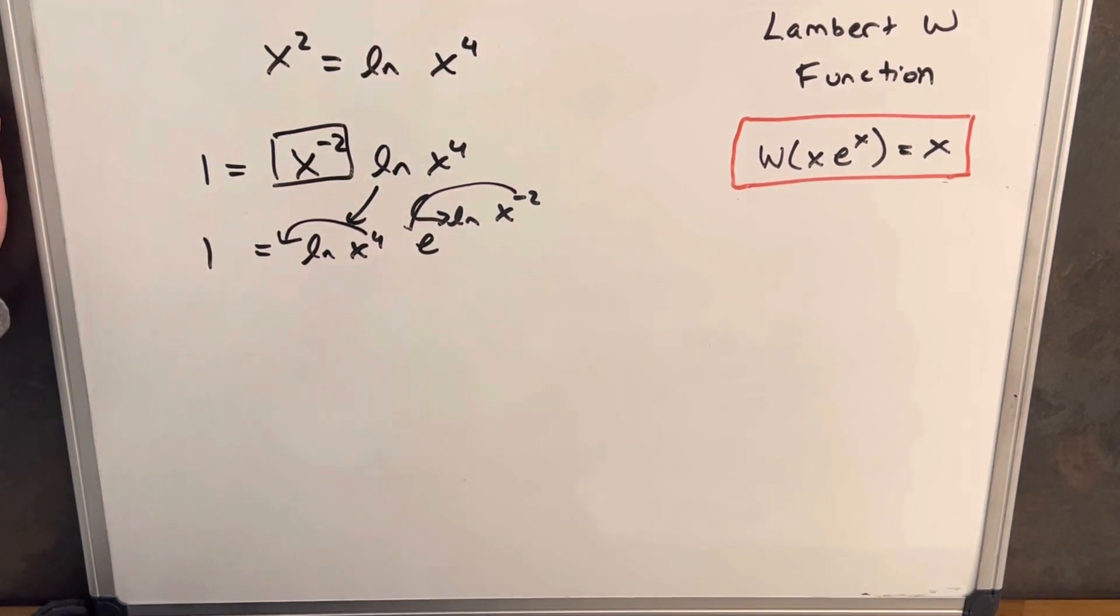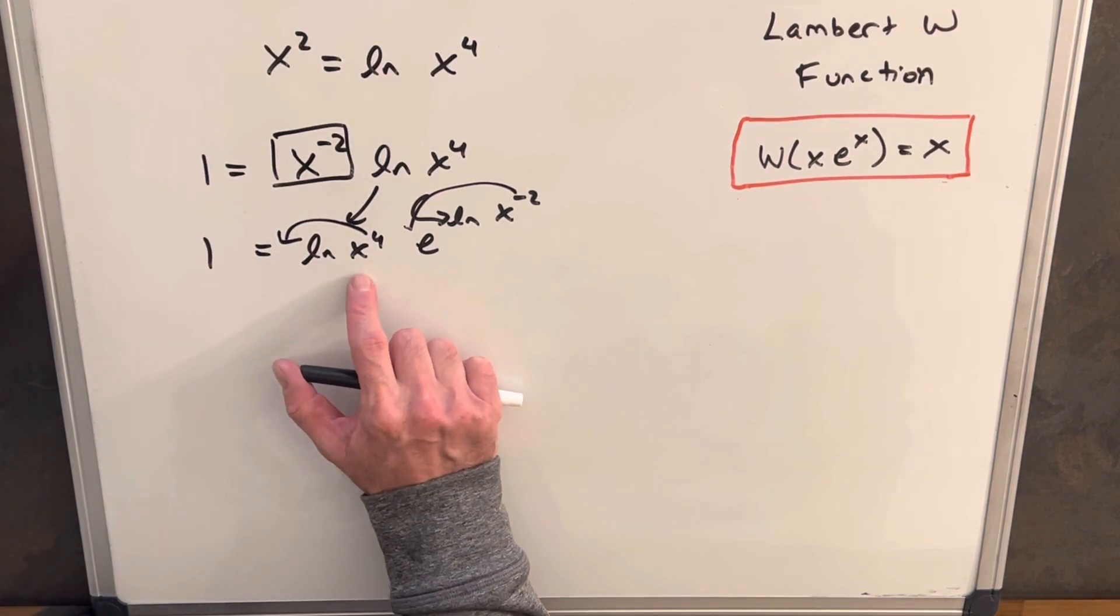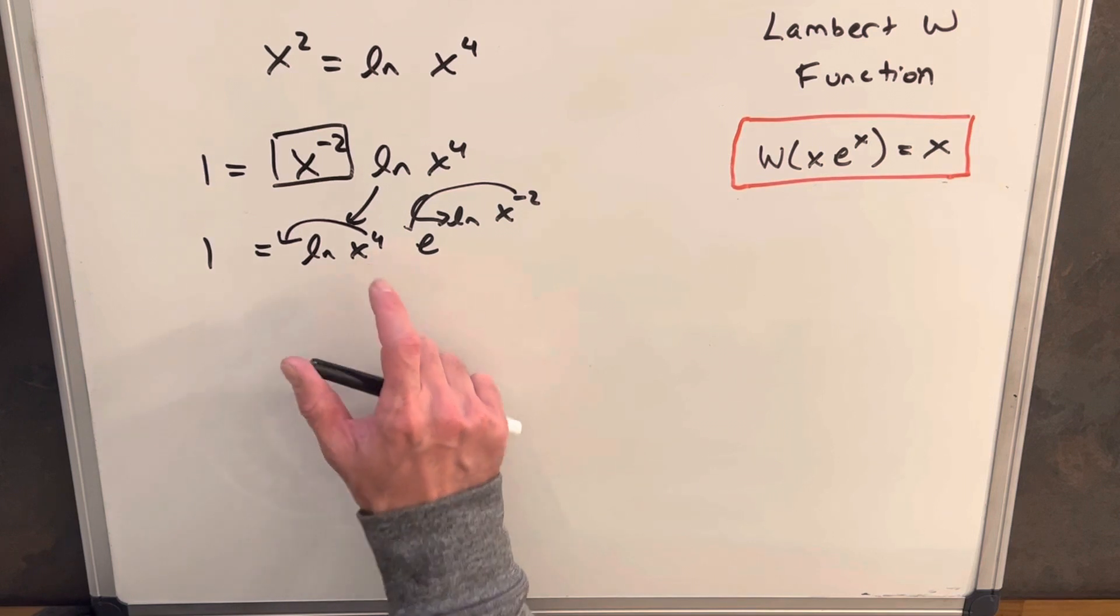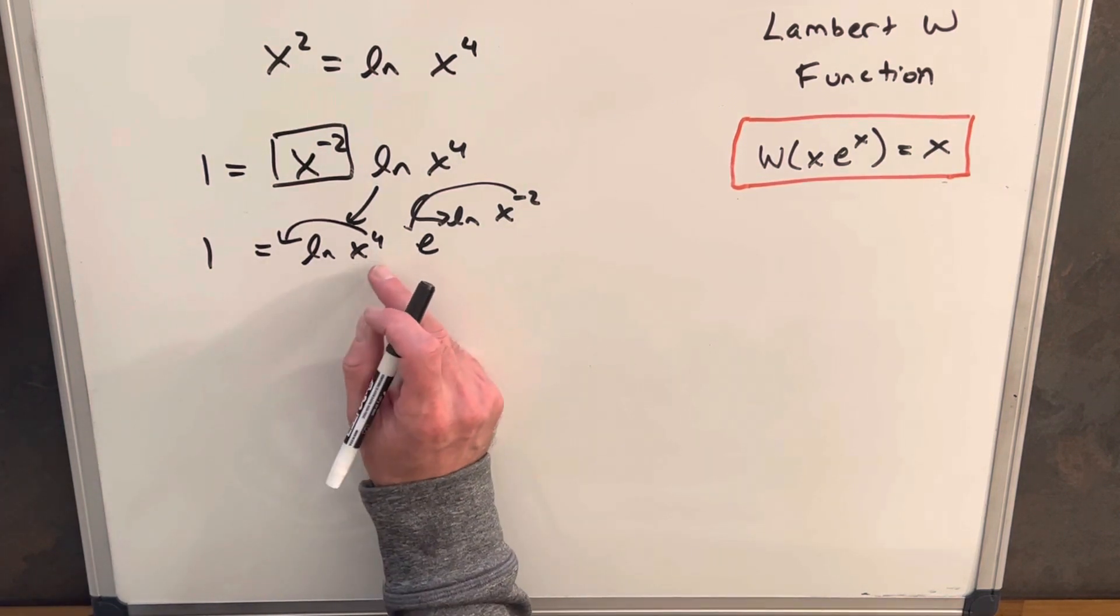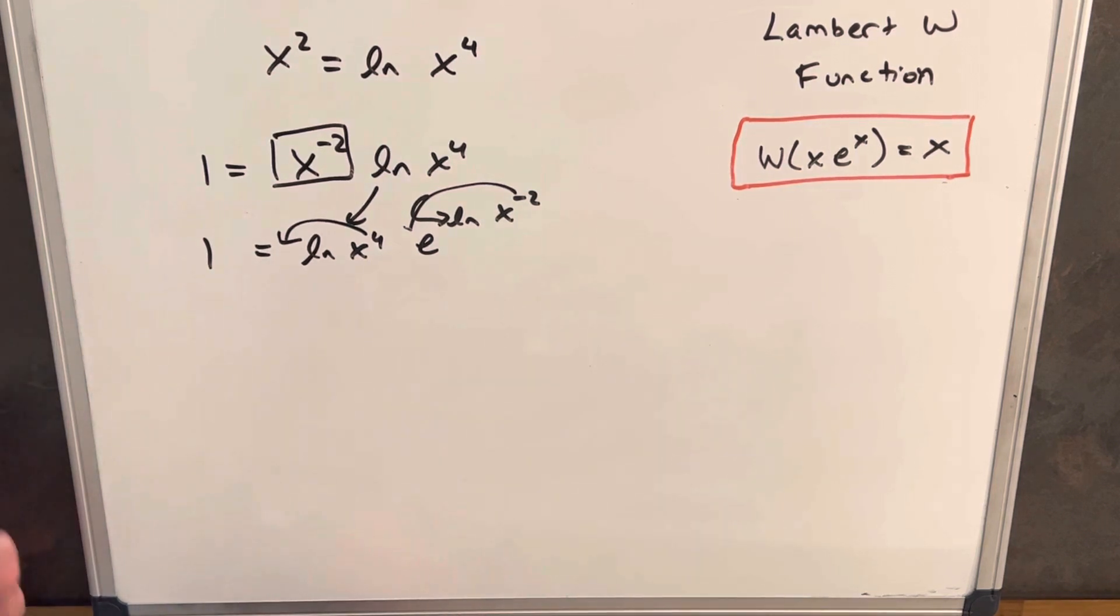But that's going to create one issue that we need to note. So when we do that, we're going to need to have absolute values around here, because when we do this, once we just have ln x, it can't be negative. But when we have the fourth on it, it can be negative. So we need to have two cases.